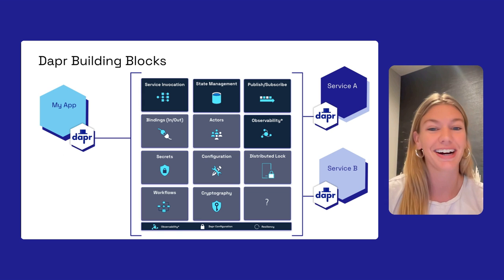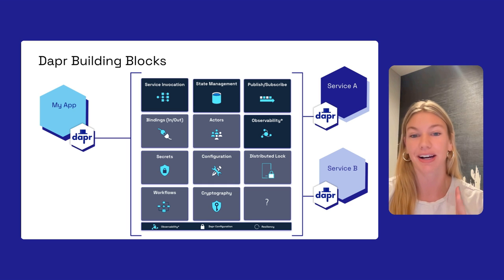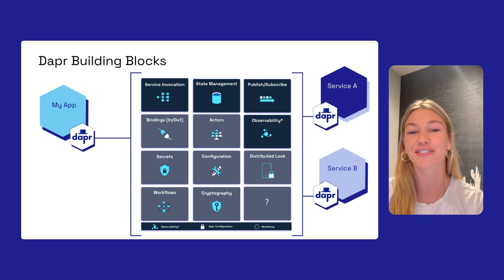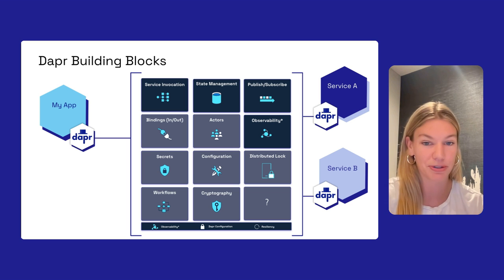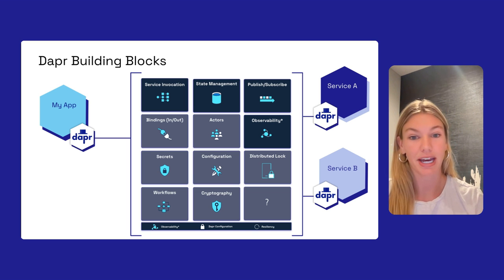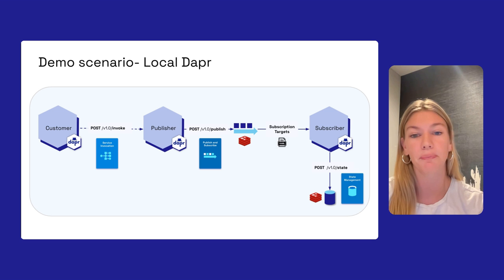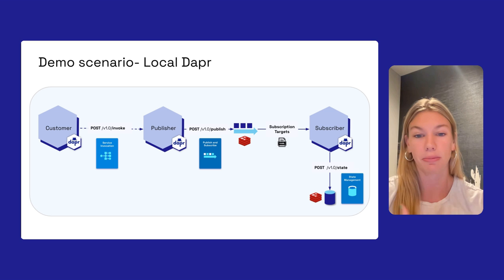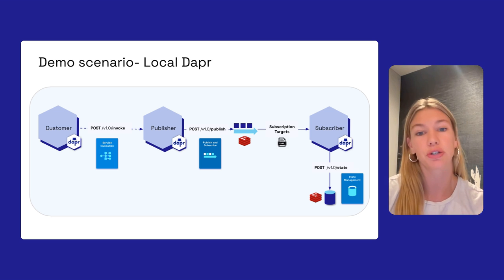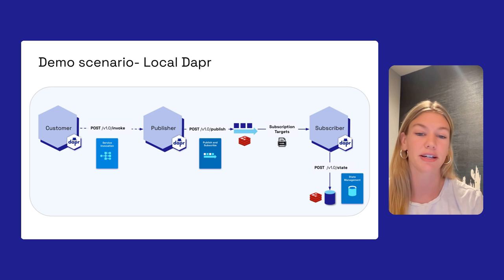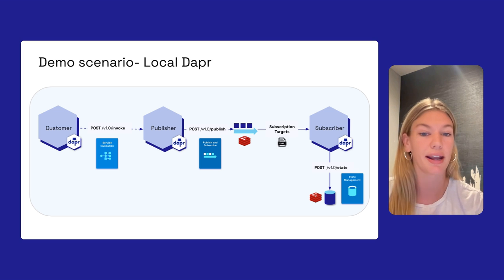Now we're going to dive into a demo and get away from the slides. We'll focus on three APIs: service invocation, state management, and publish/subscribe, with some observability as well. We'll have three services: a customer service using service invocation to invoke the publisher, the publisher publishing to a PubSub broker using Redis locally, and a subscriber using a declarative subscription to receive messages and store them to a state store — also using Redis.